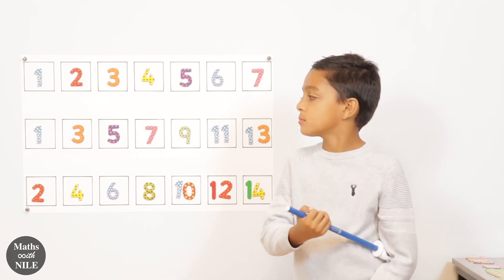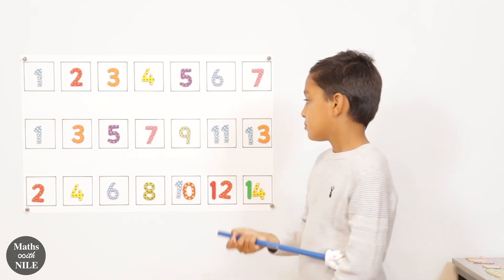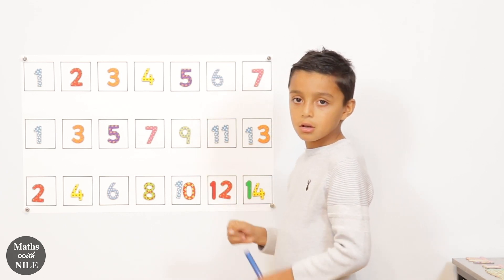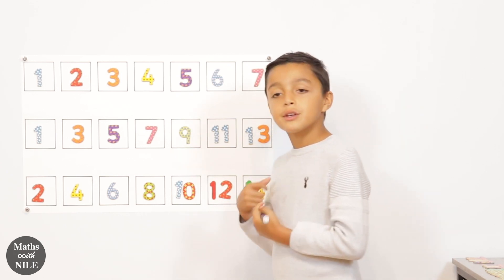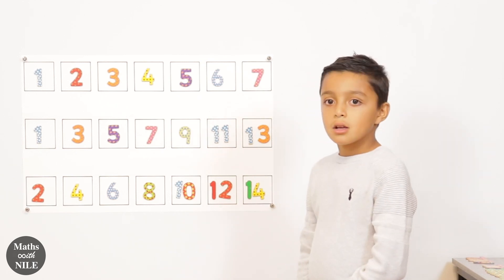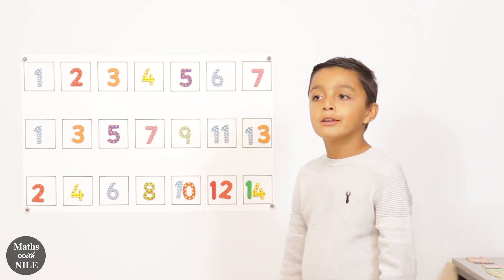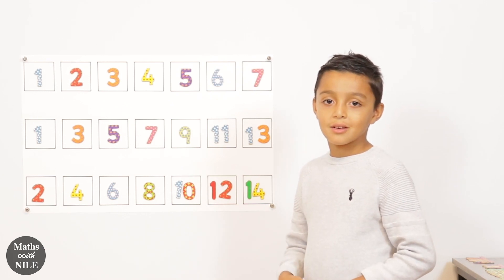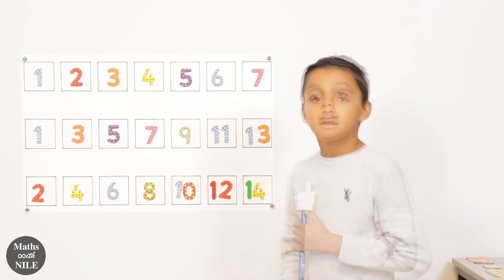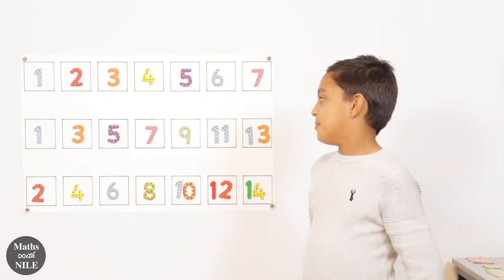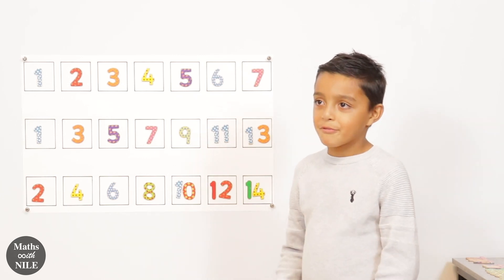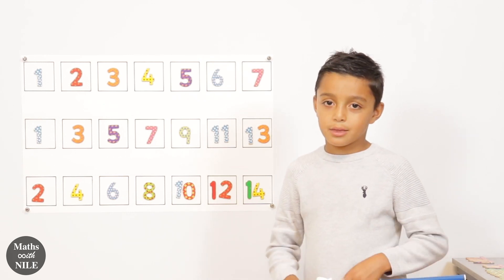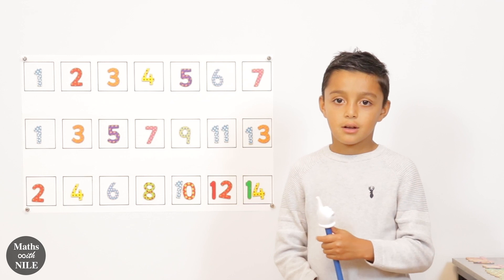What type of numbers did you say sequence two was? Odd numbers. What about sequence three? Even numbers. Can you remind everyone what is an even number? An even number is something that two can go into without a remainder. What are odd numbers? An odd number is something when you divide it by two, there's always one left over. Very good. Excellent, Naya.